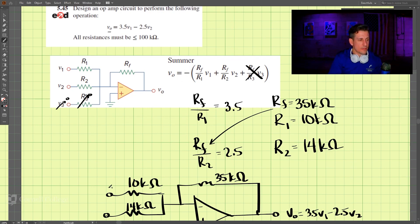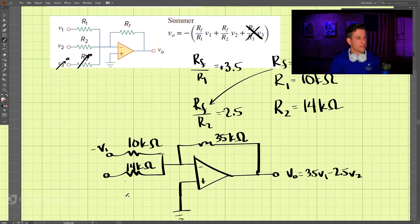That means that this equation here, to get a positive 3.5, this is supposed to be positive and this negative. To get a positive, this needs to be negative v1 that we bring in here, and this needs to be v2.